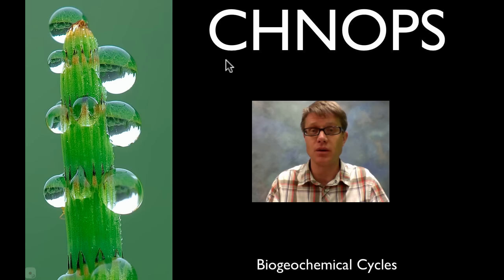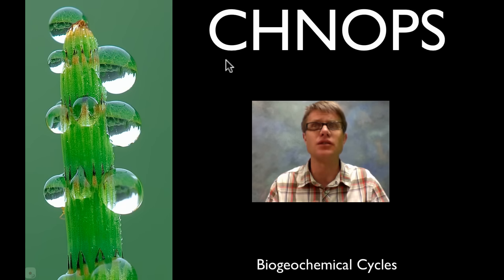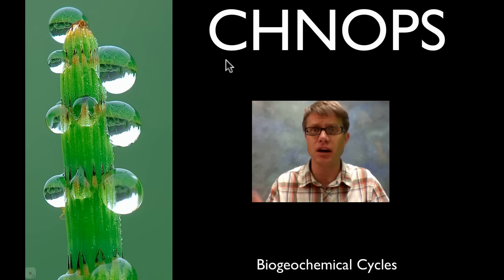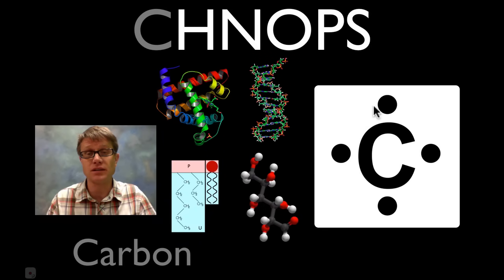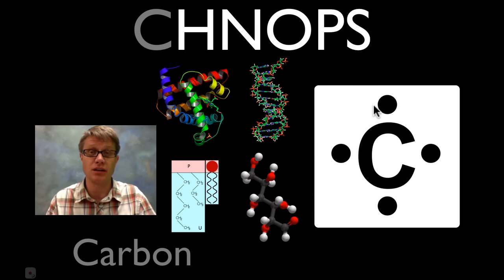And we're going to start with carbon. Try to be ahead of me — before I flip the slide you should be planning ahead. Why do we need carbon? Well carbon remember has 4 valence electrons, so it's really good at bonding and it's good at making complex organic material.